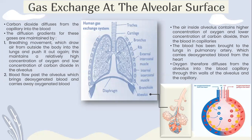The blood has mainly been brought to the lungs via the pulmonary artery, which carries deoxygenated blood from the heart. Oxygen therefore diffuses from the alveoli into the blood capillaries through the thin walls of the alveoli and the capillary. Carbon dioxide diffuses from the capillary into the alveoli.